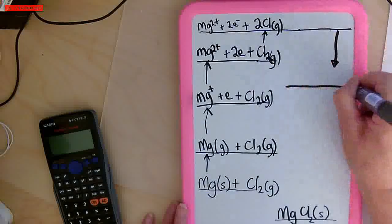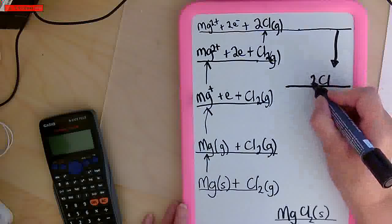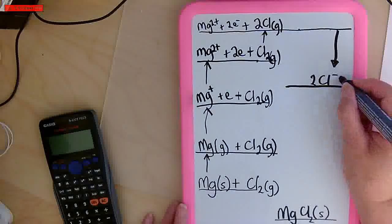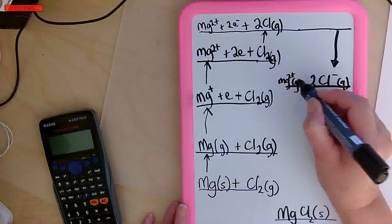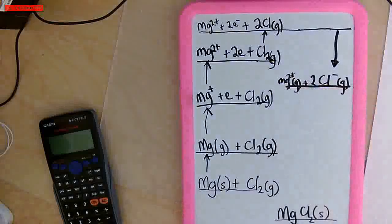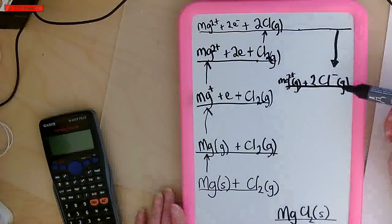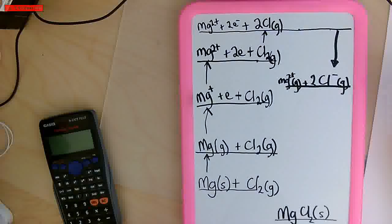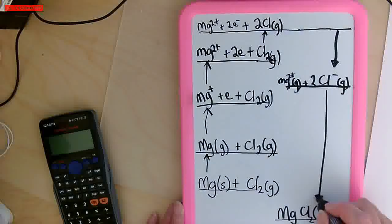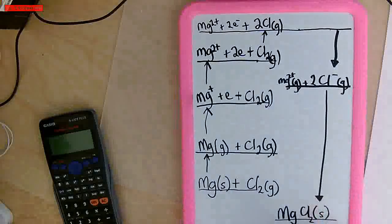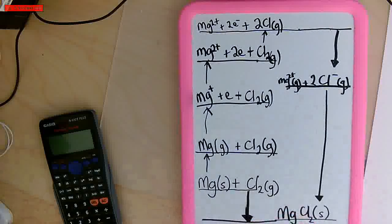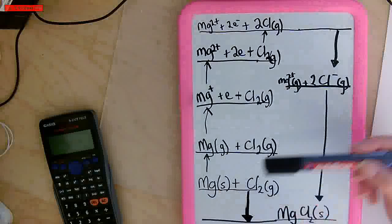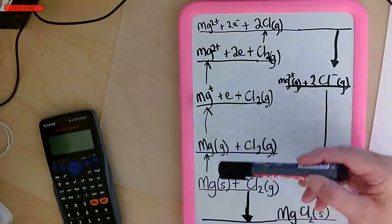Next, the chlorine atoms are going to pick up those electrons and become chloride ions — that's an exothermic process. The two chlorine atoms pick up the electrons and become chloride ions, and there's the magnesium 2+ as a gas. Finally, these three ions will come together and we'll make one mole of our ionic solid, which is our enthalpy of formation.